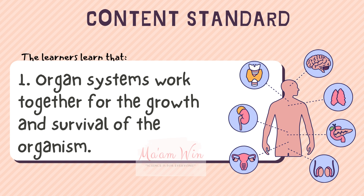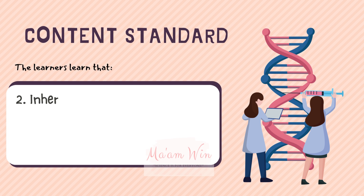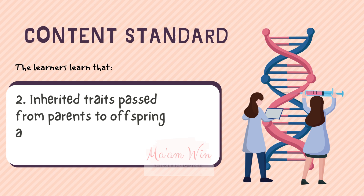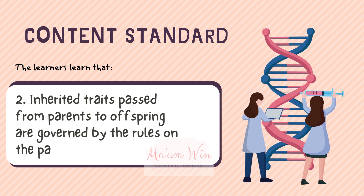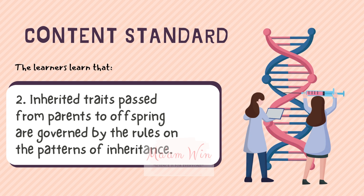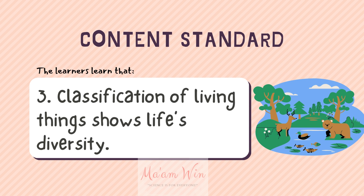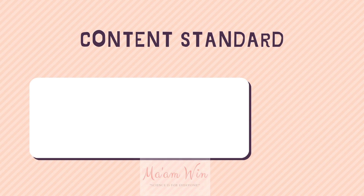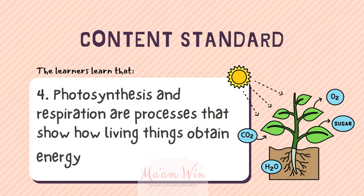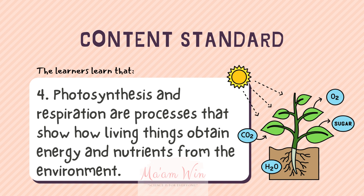We have four content standards for this quarter. First, the learners learn that: No. 1 Organ Systems Work Together for the Growth and Survival of the Organism. No. 2 Inherited Traits Passed from Parents to Offspring Are Governed by Rules on the Pattern of Inheritance. No. 3 Classification of Living Things Shows Life's Diversity. No. 4 Photosynthesis and Respiration are processes that show how living things obtain energy and nutrients from the environment.